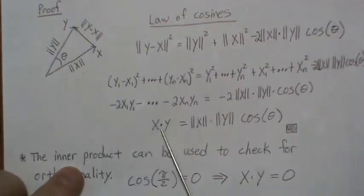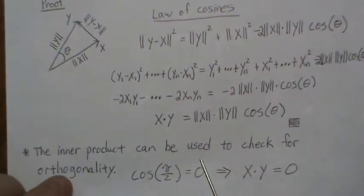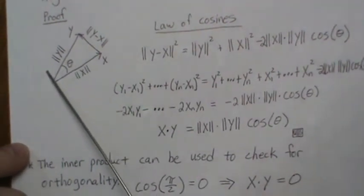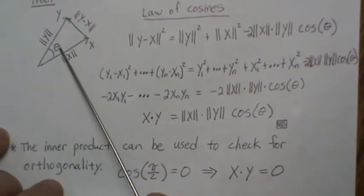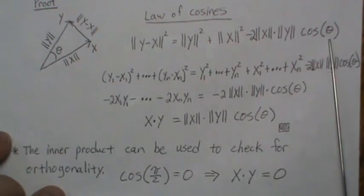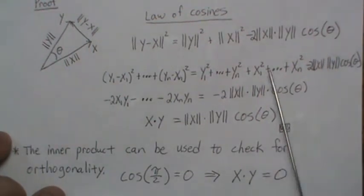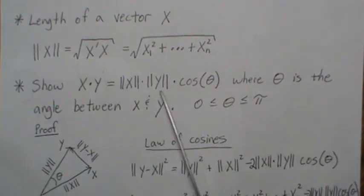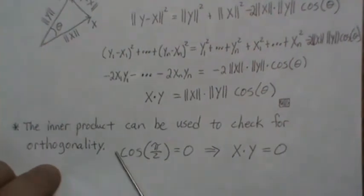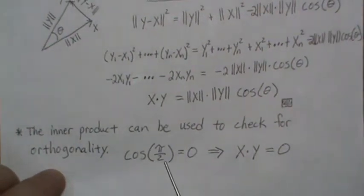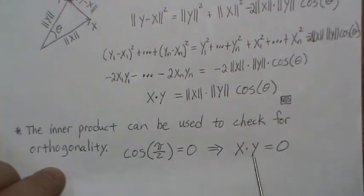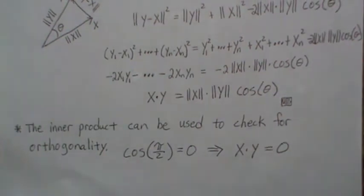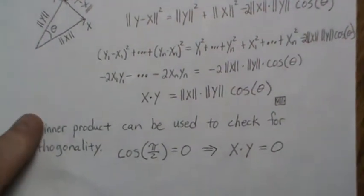This inner product — more precisely the standard inner product — can be used to check for orthogonality. If the angle between two vectors is 90 degrees, meaning they are perpendicular or orthogonal, then cosine is zero, which means the dot product is zero. So if two vectors are perpendicular to each other, their dot product is zero — that is our check for orthogonality.